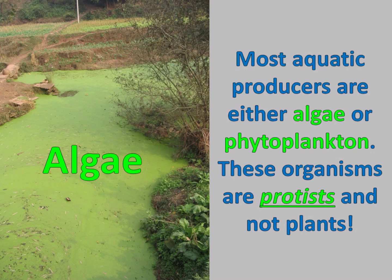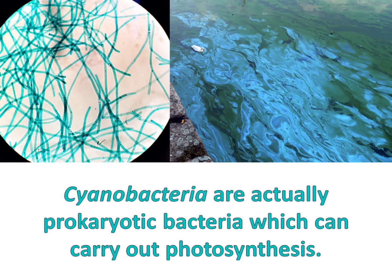Most aquatic producers are either algae or phytoplankton. These organisms are protists and not plants. Cyanobacteria are actually prokaryotic bacteria which can carry out photosynthesis.